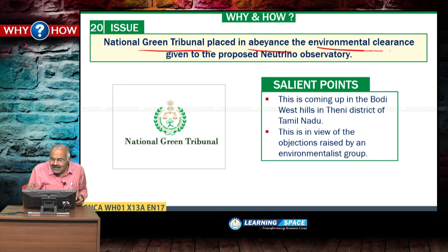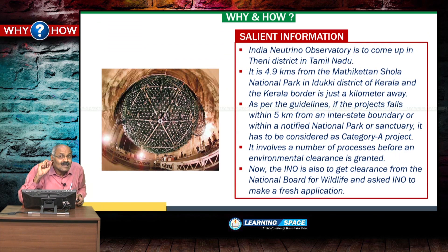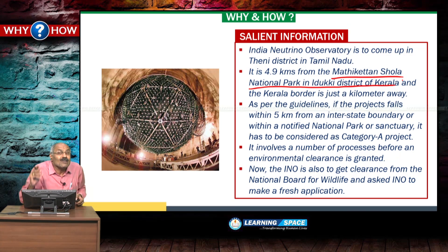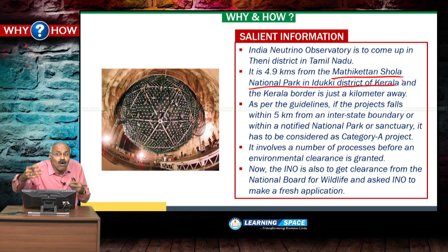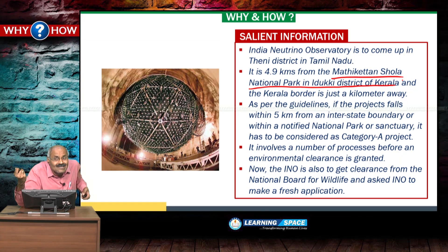The National Green Tribunal placed in abeyance the environmental clearance given to the proposed new neutrino observatory coming up in Theni district of Tamil Nadu in the Bodhi West Hills, close to the Kerala border and within 5 kilometers of Mathikettan Shola National Park in Idukki district of Kerala. As per guidelines, if a project falls within 5 kilometers of an interstate boundary or within a notified national park or sanctuary, stringent norms apply and it must be treated as a Category A project.